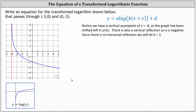And now comparing the shape of the graph, notice the graph has been reflected vertically, which indicates the value of a must be negative. And since we don't have a horizontal reflection, we will let b equal one.